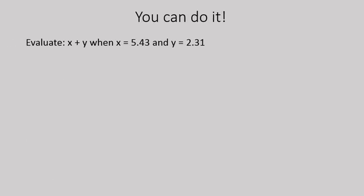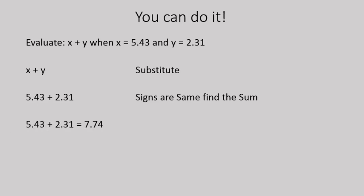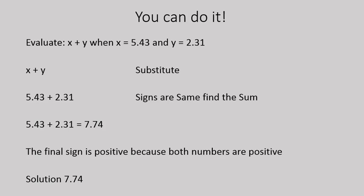Now for our last type of question is when we have to add in some substitution. So we're evaluating x plus y when x is 5.43 and y is 2.31. So we'll start out by substituting x in for x and y in for y. Same as regular substituting, only they have decimals in there. These ones, the signs are the same, so we're just going to add them together. 5.43 plus 2.31 will give you 7.74. The final sign is positive because both numbers are positive. So our solution would be 7.74.